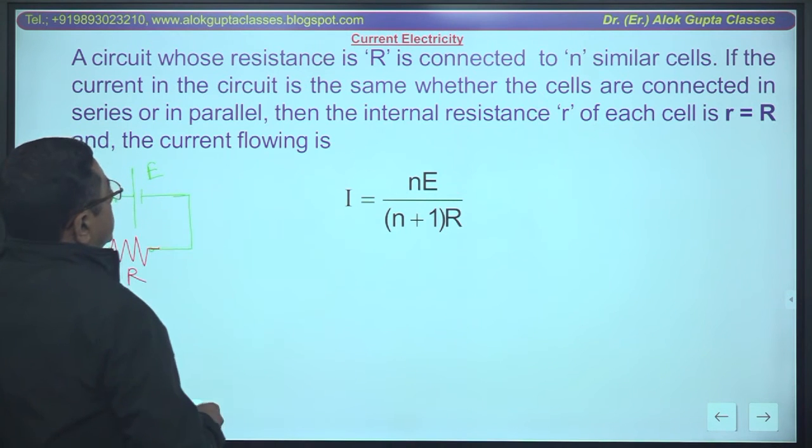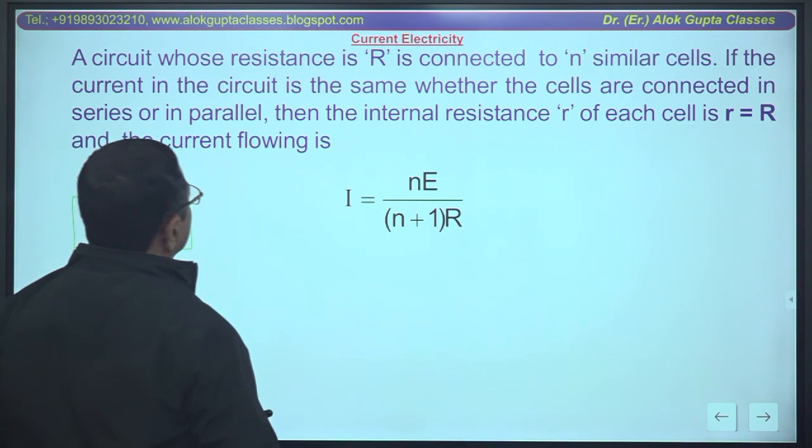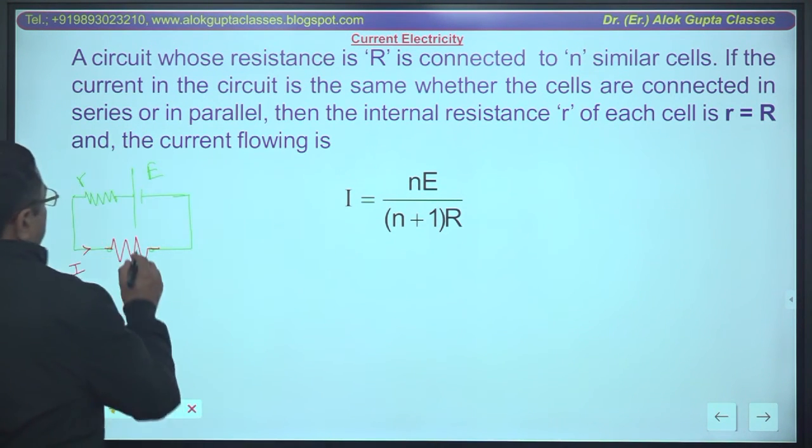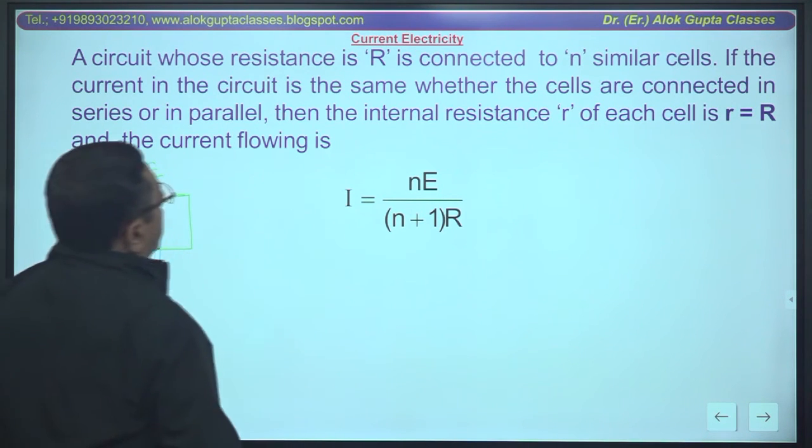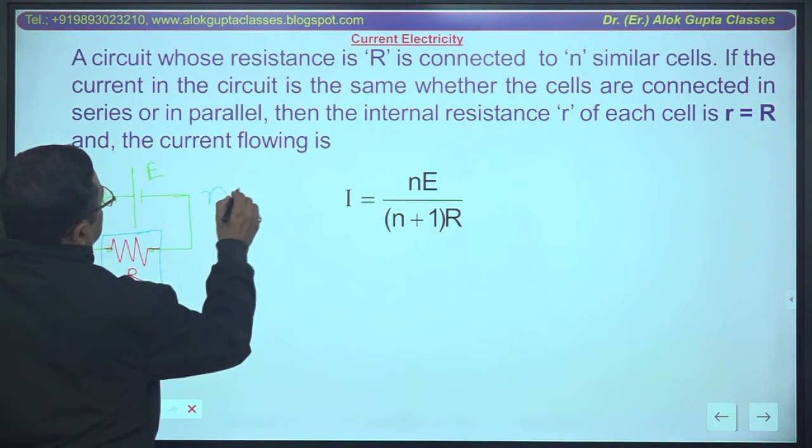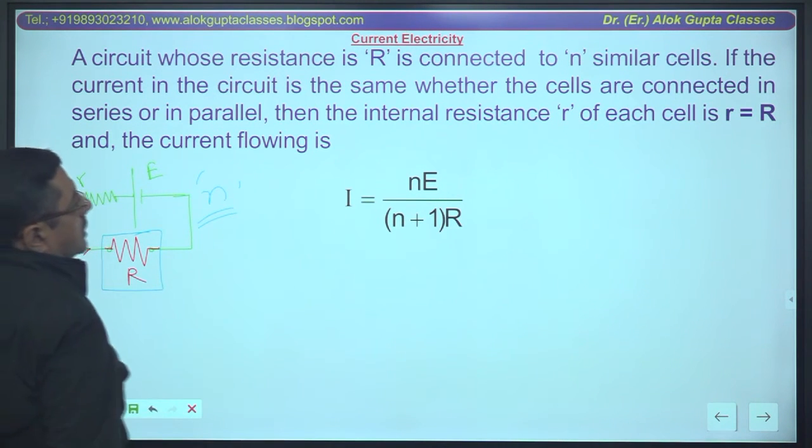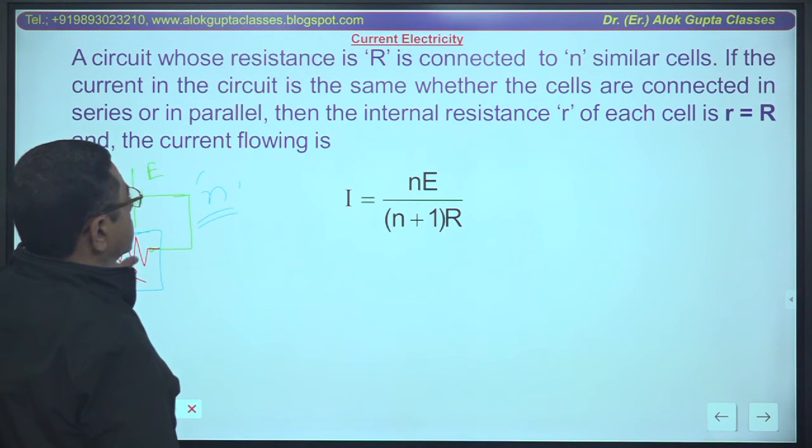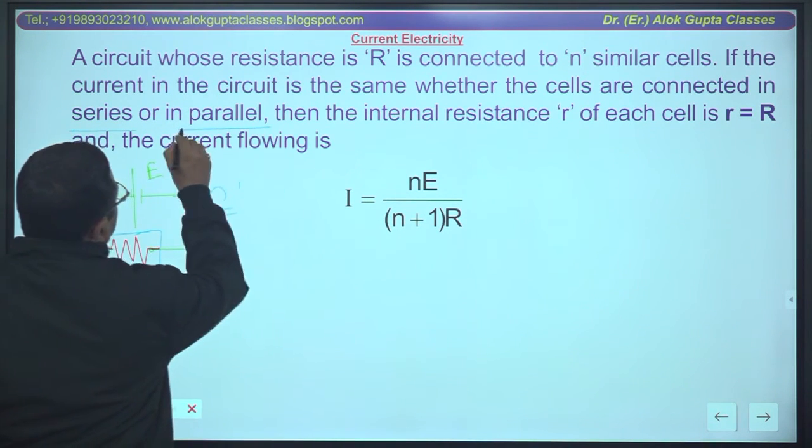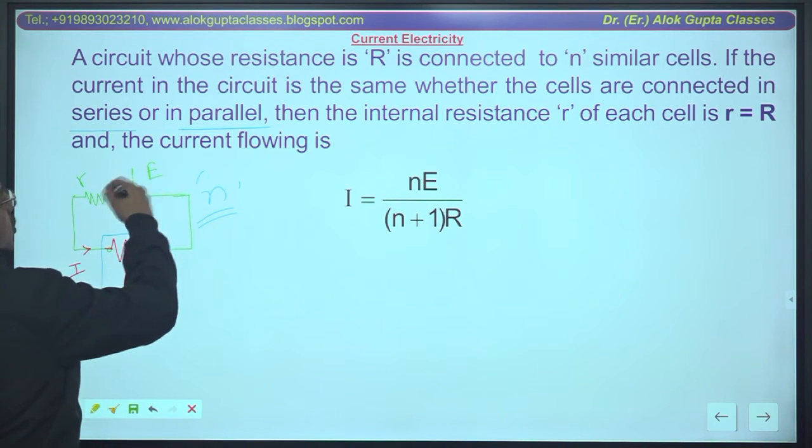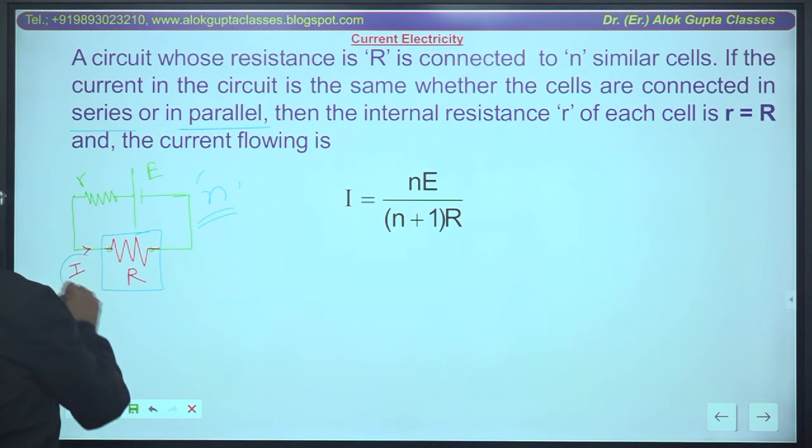One important condition: a circuit whose resistance is R is connected to n similar cells. If the current in the circuit is the same whether the cells are connected in series or in parallel - series and parallel, in circuit, when cells are connected, current is same every time, both times.